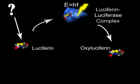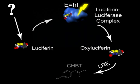The substrate is released in an inactive form called oxyluciferin. This form of luciferin cannot be used to emit light, but another enzyme, luciferin-regenerating enzyme, or LRE, converts it into a compound called CHBT. CHBT is believed to be non-enzymatically converted to luciferin, but this requires the addition of the amino acid D-cysteine.